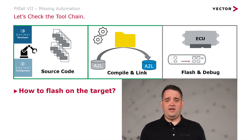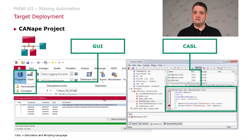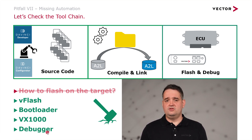Once we build the file, we tackle how to flash on the target. In this case I'm using the VEX1000 system connected to my evaluation board. In my Canopy project I can use the graphical user interface — via the download button, after selecting the right flash kernel, I can deploy the software on the target. You can also automate this step further using the scripting language CASL, similar to couple code from CANOO. Flashing was never a big deal in terms of time. You could use VFLASH if you have a bootloader, the VEX1000, or your debugger — whatever you prefer.